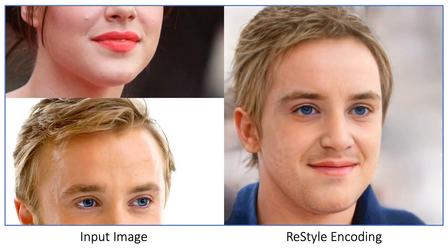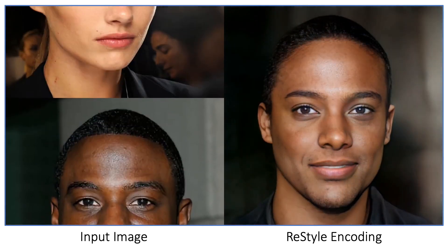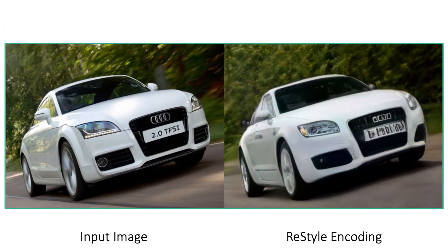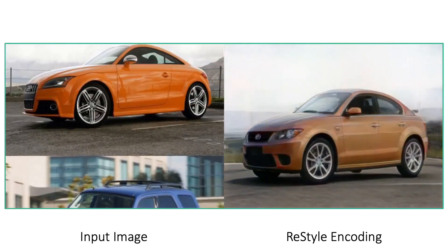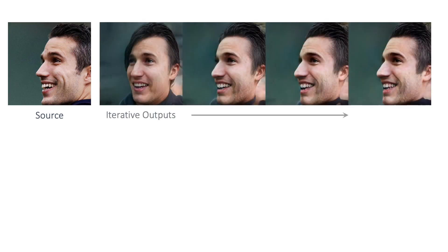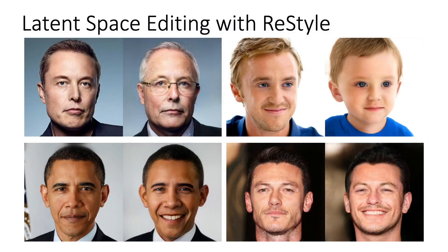This iterative refinement results in an efficient yet accurate inversion scheme operating in less than half a second per image. We show that ReStyle is also successful on more challenging, less structured domains such as cars, horses, and churches. To show the iterative refinement at work, we can visualize the step-by-step reconstructions of ReStyle. Notice how we are able to gradually refine the pose of the individual at the top and the church structure in the set of images at the bottom. We also show a wide collection of edits performed on real images, demonstrating that ReStyle provides meaningful inversions.